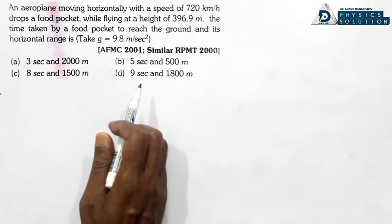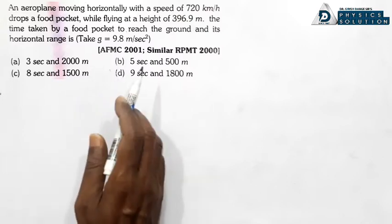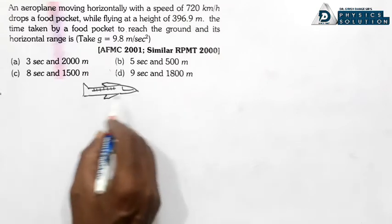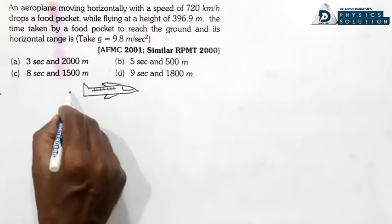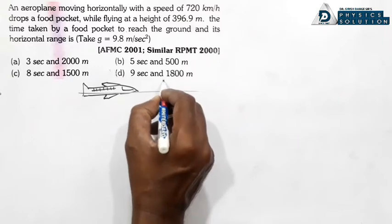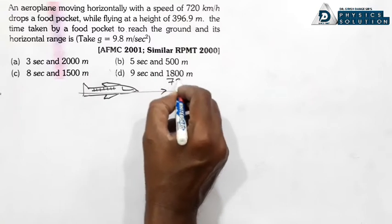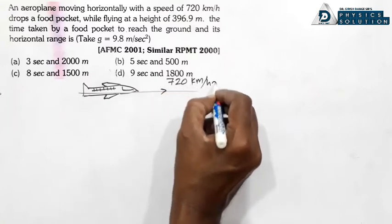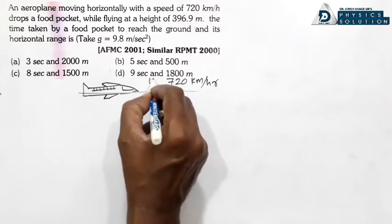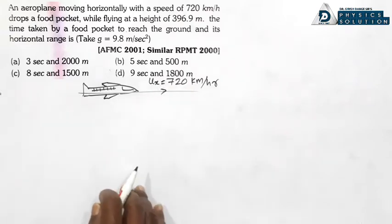Yahan par kya diya hai — aeroplane moving with horizontal velocity aur uski height di hai. Yeh aeroplane hai aur yeh moving with horizontal velocity. Velocity yahan par 720 km/h diye hain — this is horizontal velocity UX.